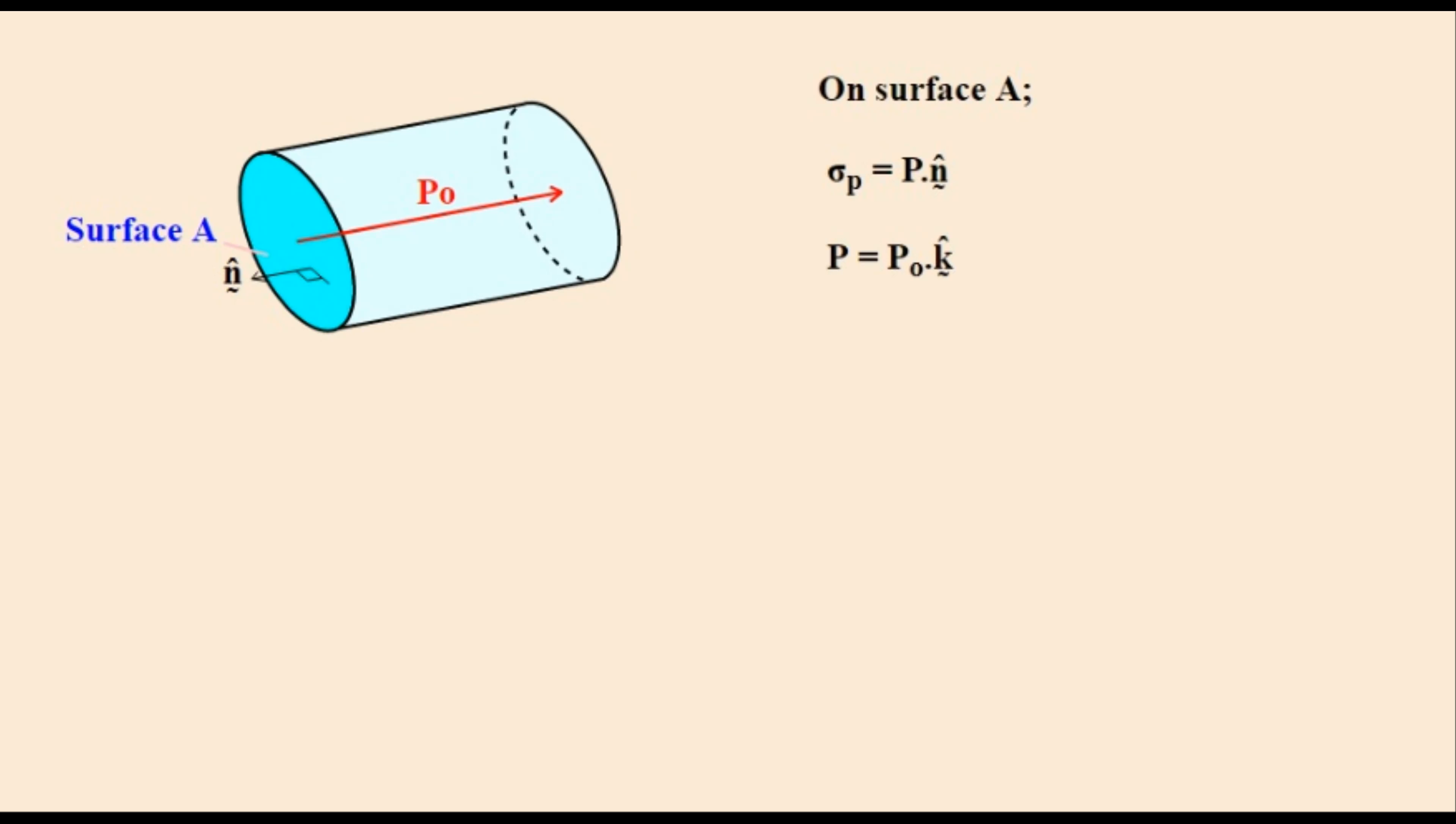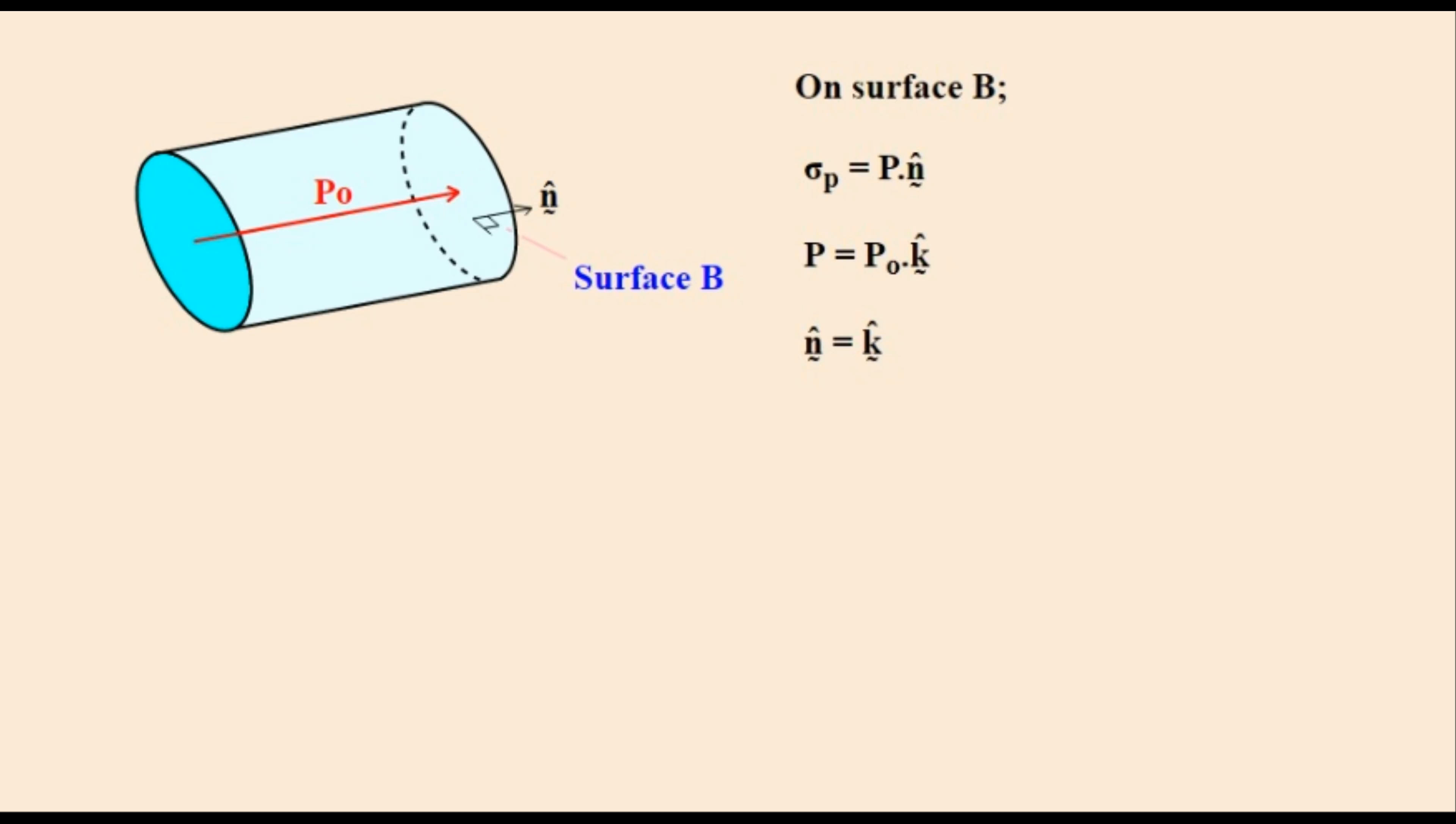The polarization is P0 in the direction given by the K unit vector. The normal vector for surface A is minus unit K as can be easily seen. The surface normal of A is opposite to the polarization vector of the object. Plugging these values into the first equation gives this expression which is a dot product. Using the rules of dot products unit K times unit minus K equals negative 1 leaving minus P0 as the answer.